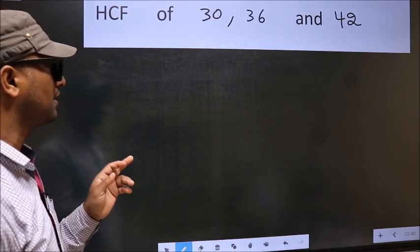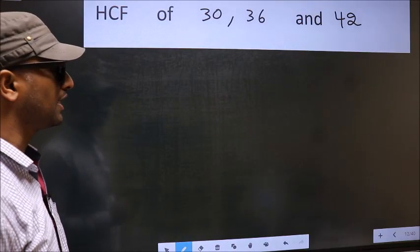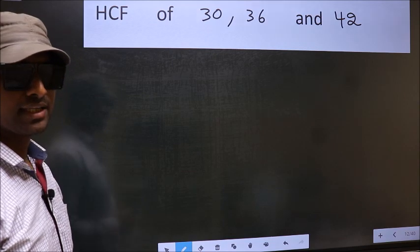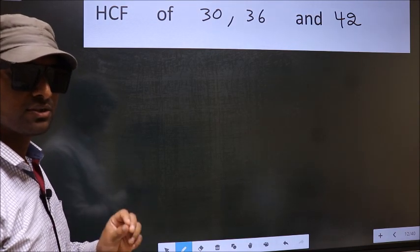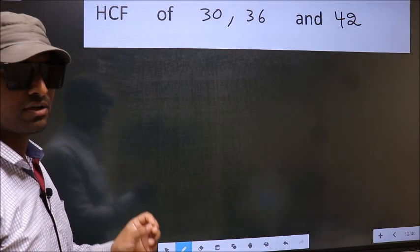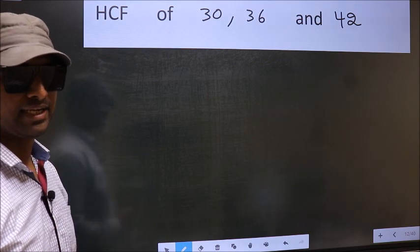HCF of 30, 36 and 42. To find the HCF, first we should do the prime factorization of each number separately.